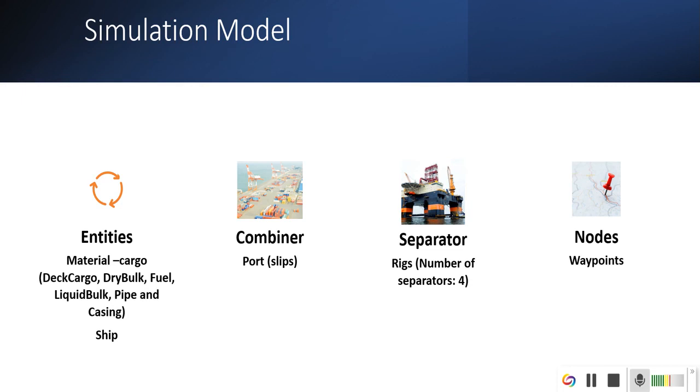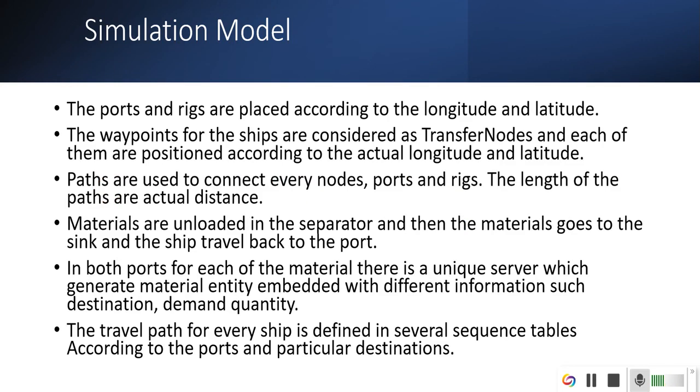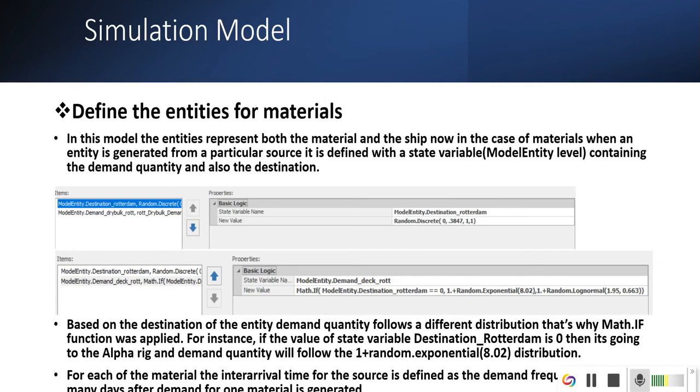Entities are materials and ships, combiners are ports, separators are rigs, and nodes are considered as waypoints. The paths connect the nodes. The actual distance of the path defines the actual distance. The materials are unloaded into the separator and then material goes to the sink. The materials are loaded in the combiner which is considered as port. Both ports and the separator have unique servers which generate material embedded with different information. The travel path for every ship is defined in several sequence tables according to the particular destination which is in appendix.